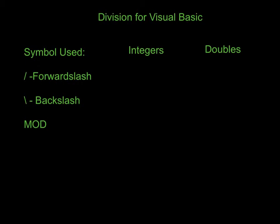Division is a little bit different in Visual Basic in the sense that with integers there are three different things you can do. Doubles is pretty consistent. Let's first take a look at the symbols we're using. Over here to the left you have the traditional forward slash, which you're used to with division. That's the main one we use with doubles, because doubles have decimal point numbers, so we can just do traditional division with that. The backslash is used with integers, and we'll take a look at why.